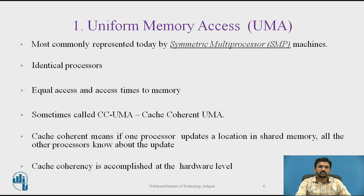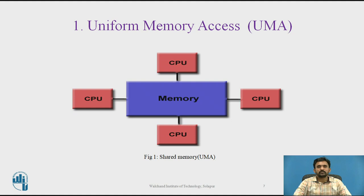Sometimes UMA is also called CC-UMA, that is cache coherent UMA. Cache coherent means if one processor updates a location in shared memory, all other processors know about the update, and cache coherence is accomplished at the hardware level. In this model, all CPUs share the address space and only a single instance of the operating system is required. When a process terminates or goes into a wait state, the OS can loop the process table for another process to be dispatched to the idle CPU.